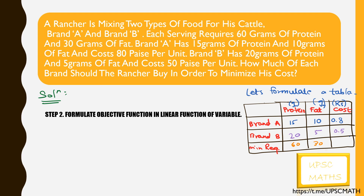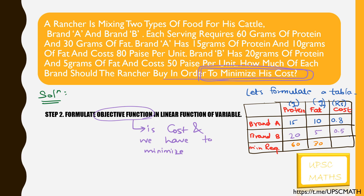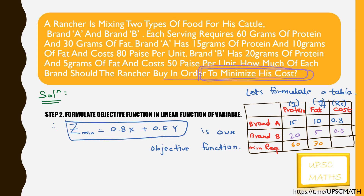Step 2 is to formulate the objective function as a linear function of the variables. In this case, the objective function is cost, which we have to minimize. So the objective function becomes: minimize z = 0.8x + 0.5y.